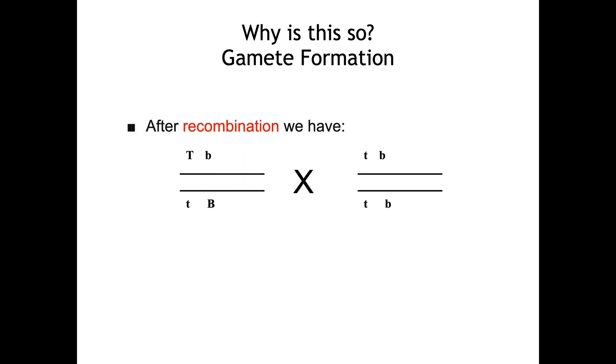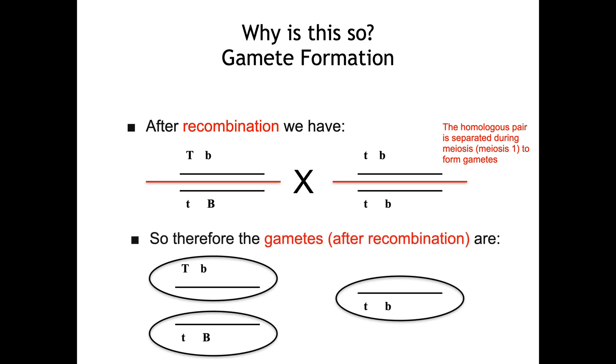After that recombination, we can then go ahead and separate the homologous pair. I did demonstrate this before and therefore we have these gametes. Now the gametes that you see on the left-hand side are only those that result from recombination, so you're not seeing the other ones that did not go through recombination.